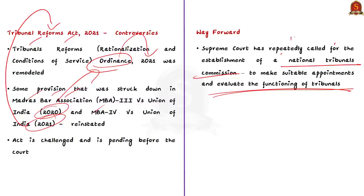These are the important points highlighted in this editorial. In this discussion, we saw about the issues surrounding NCLAT — cherry-picking of names by not exhausting the priority list, and asking incumbents who still have tenure to go on leave. We also discussed the Tribunal Reforms Act 2021 and Tribunal Reforms Ordinance 2021 and why they were controversial. Finally, the way forward is the National Tribunals Commission, which can make the appointment process transparent and objective.